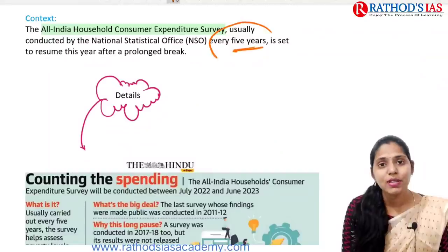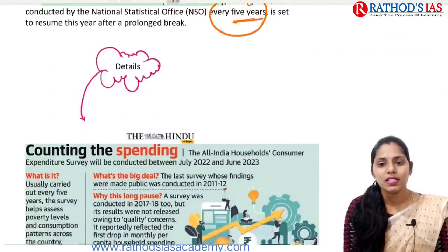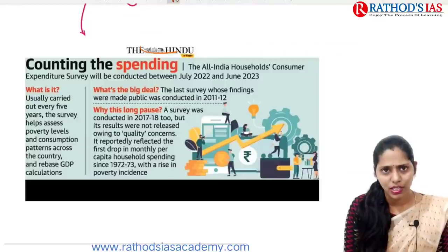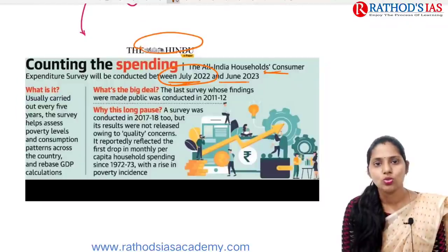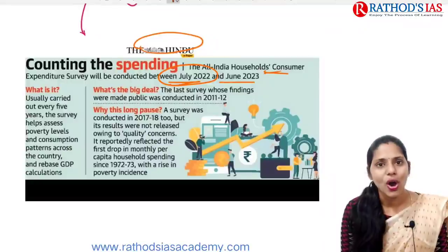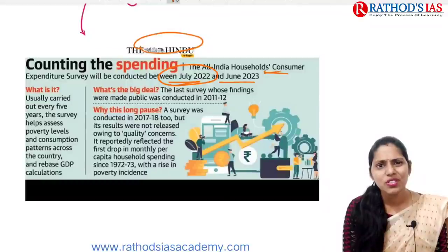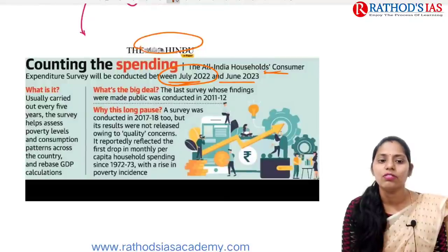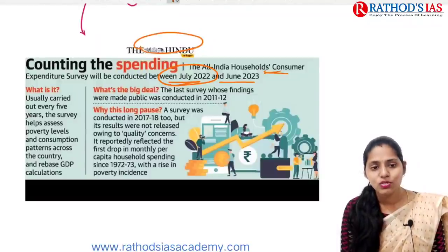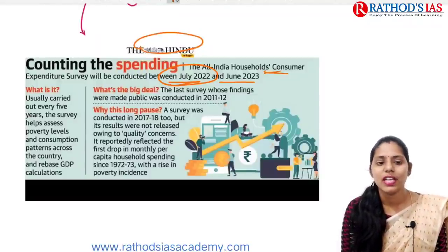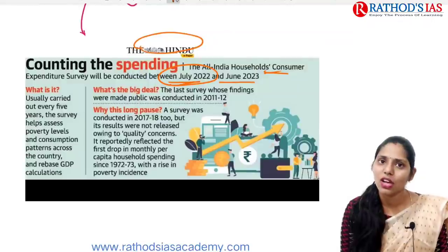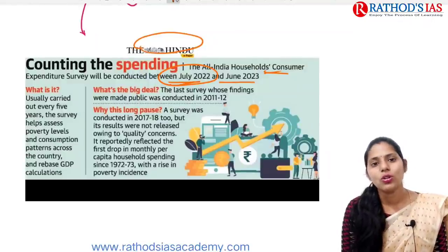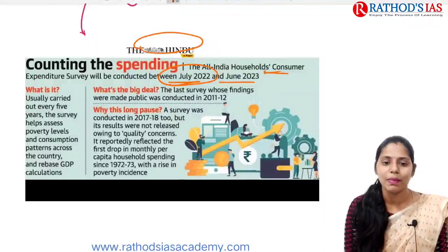The All India Households Consumer Expenditure Survey will be conducted between July 2022 and June 2023. This survey, carried out once every five years, mainly helps to get information regarding poverty levels and how consumption patterns change. It will also be helpful for GDP calculation. The last survey whose findings were made public was conducted in 2011-12. A survey was conducted in 2017-18 but the results have not been published.